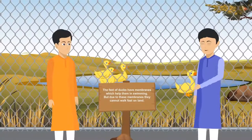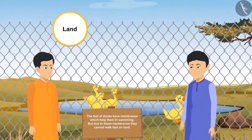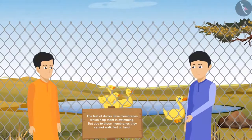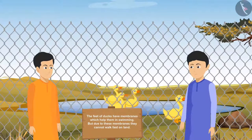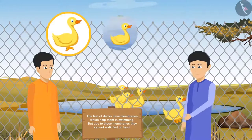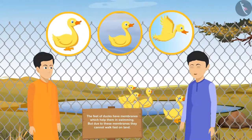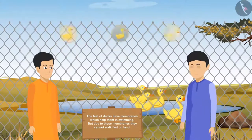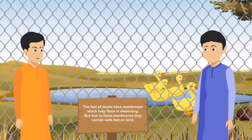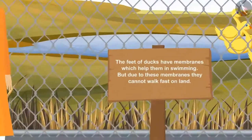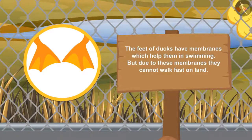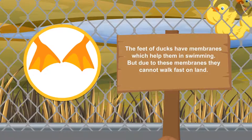'See the beautiful ducks, Zeeshan! They can move on land, water, and even in the sky — in other words, they can walk, swim, fly, and even dive underwater.' 'Looks like they are the superman of the birds!' 'Look at this — it is written that the claws of ducks have membranes which help them in swimming, but due to these membranes they cannot walk fast on land.' 'All this is so interesting!'